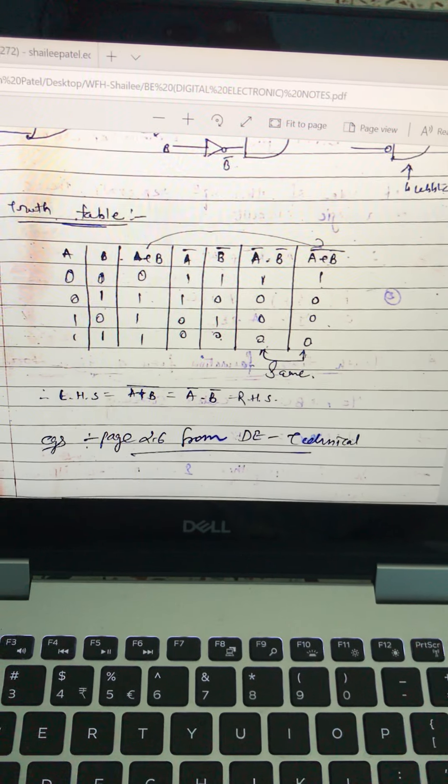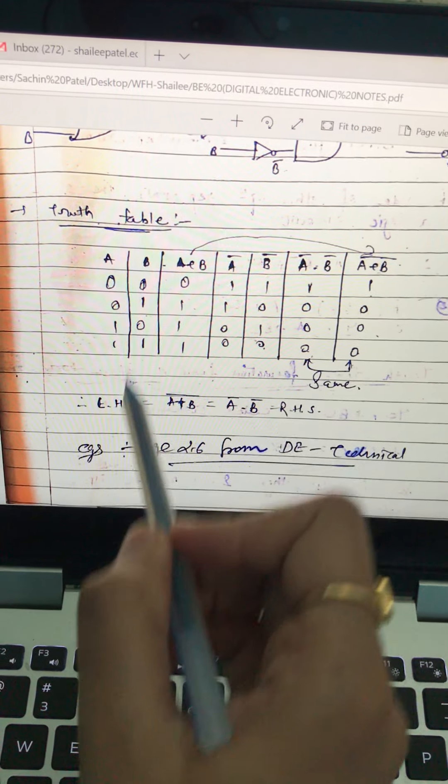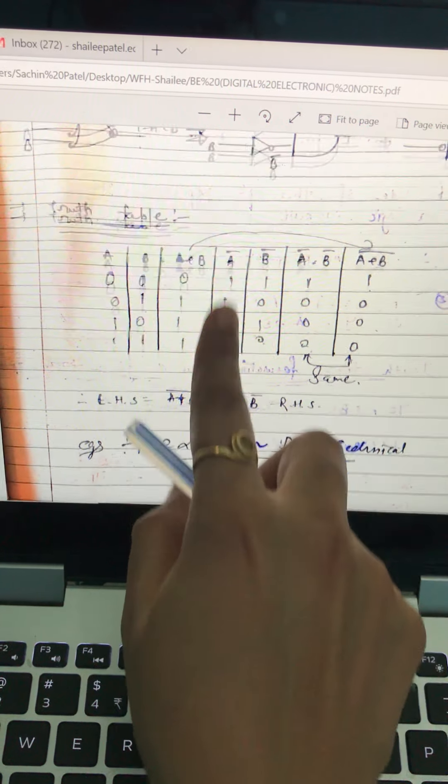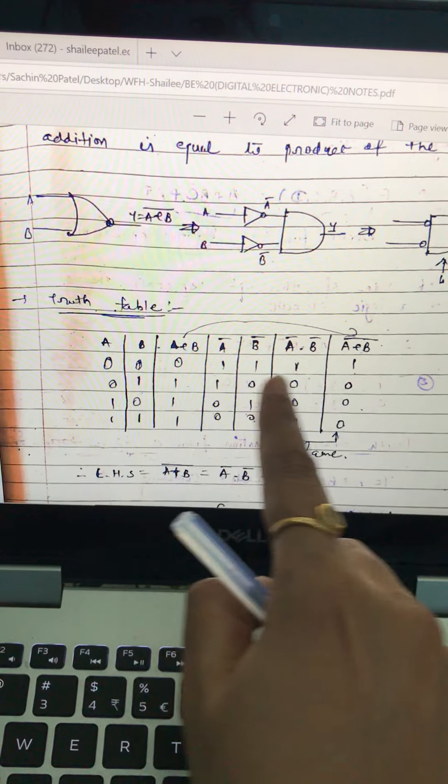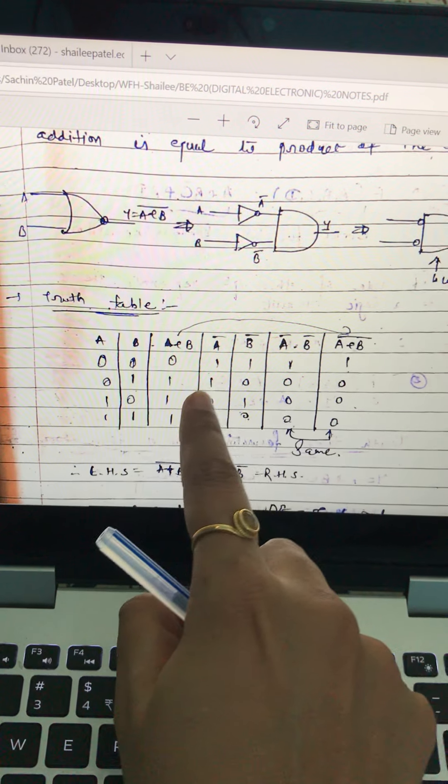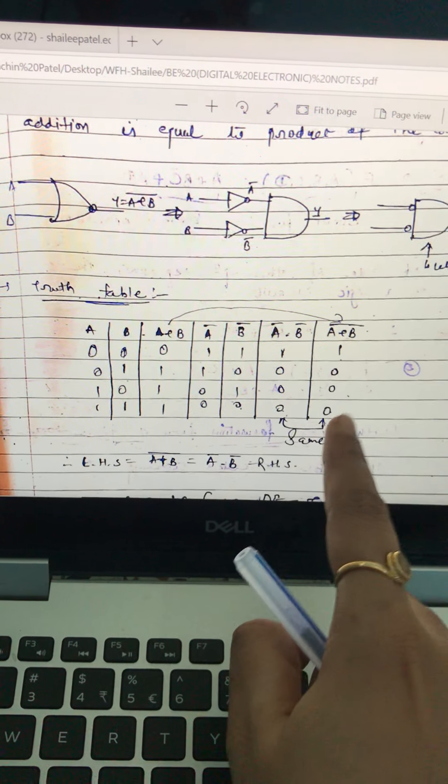Now let's do the same thing and prove it with the truth table. A, B, A bar, B bar. You need to invert it. A plus B as you want it, make it bar. So this is your left hand side. Now for right hand side you need to do multiplication of this. So 1 into 1, 1 else will 0. And this is OR gate.